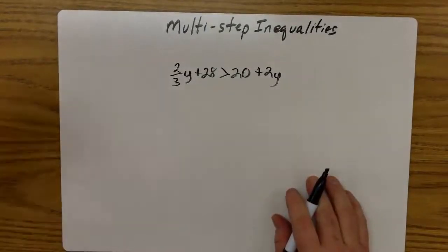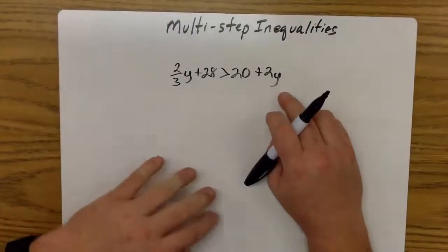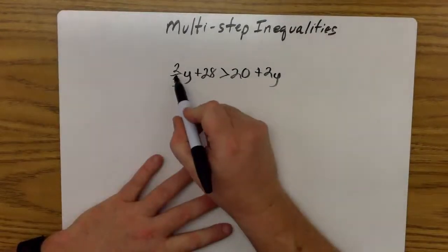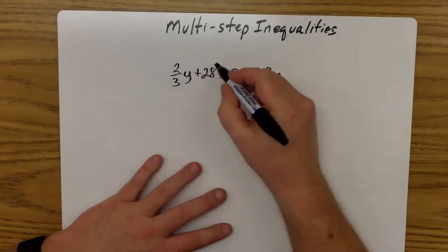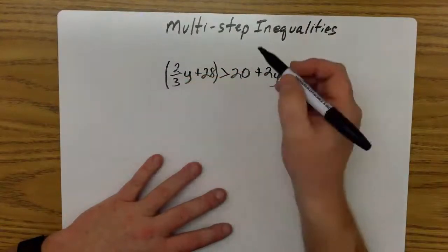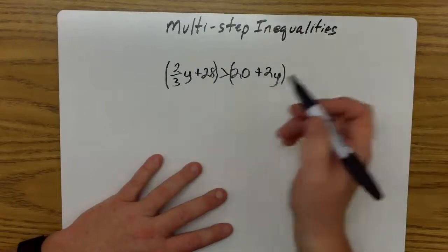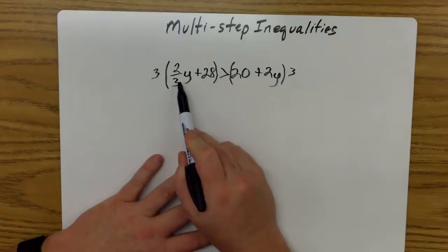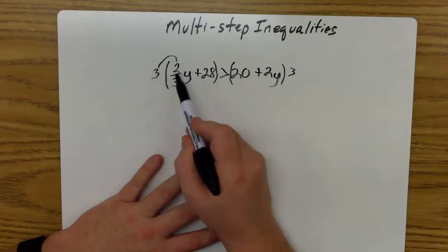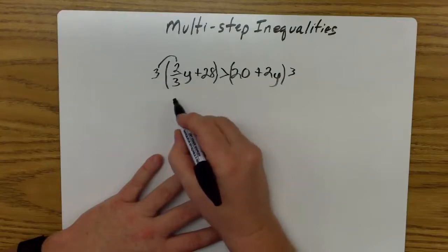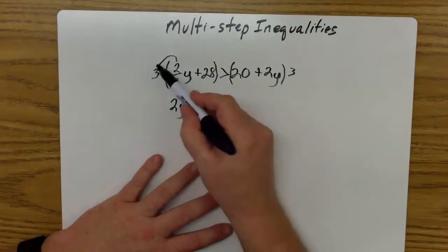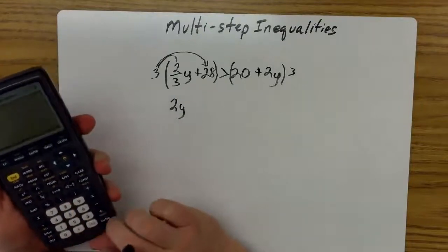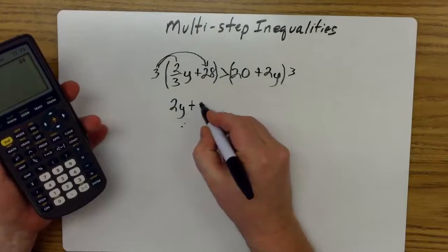Now I could go ahead and deal with the fraction in the problem, but let's say I'm not very good at fractions. So I'm going to go ahead and eliminate or clear the fraction. The way we clear the fraction is we undo the divide of 3, and the way we undo the divide of 3 is we multiply by 3. So we're going to make everything on both sides of the inequality symbol 3 times bigger. I'm going to distribute here, 3 times 2/3. 3 times 2 is 6, 6 divided by 3 is 2, so I'm left with 2y. Then I'm going to distribute to my 28, so that's going to be 3 times 28, which is 84.